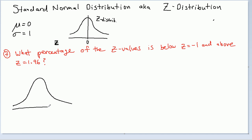Here's our Z distribution. Getting a little better at these pictures if you've noticed, if you've been following this series of lectures or examples. Here's my Z axis. Here's negative 1 — let me just draw a vertical line up. And here's 1.96, definitely to the right of 0. I want above 1.96, that's what the question is asking me, and below negative 1.